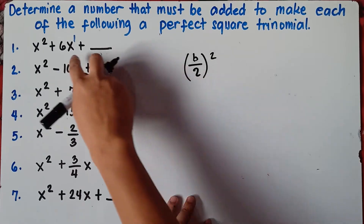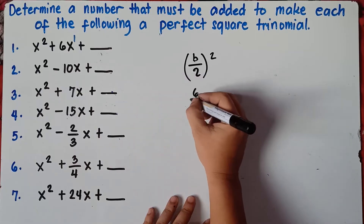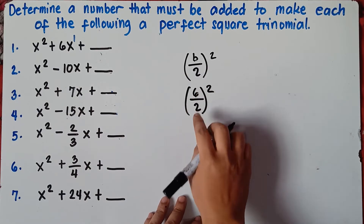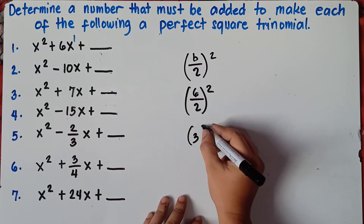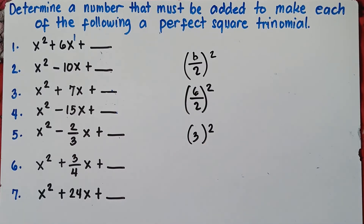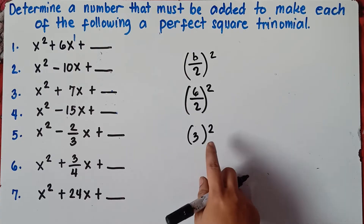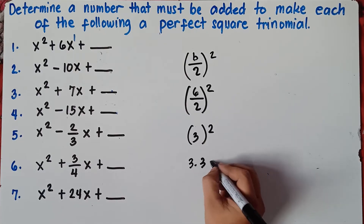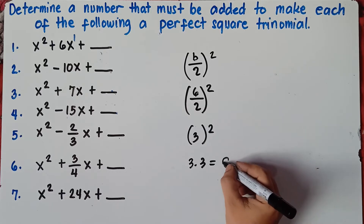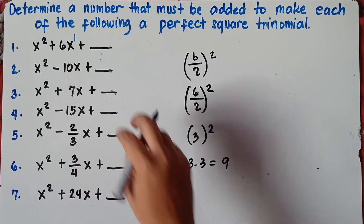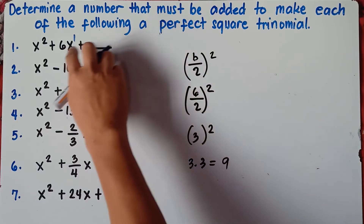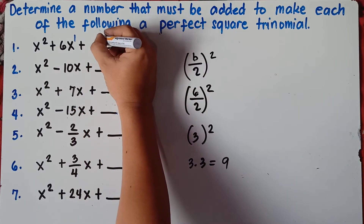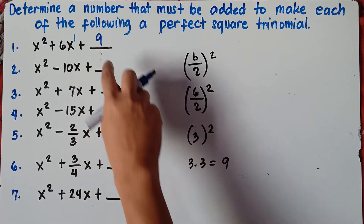Simply substitute the value of b, which is 6. So 6 divided by 2, quantity squared. 6 divided by 2 is 3, then squared. 3 squared means you multiply 3 by itself twice: 3 times 3 is 9. Therefore, the number to make this a perfect square trinomial is 9.